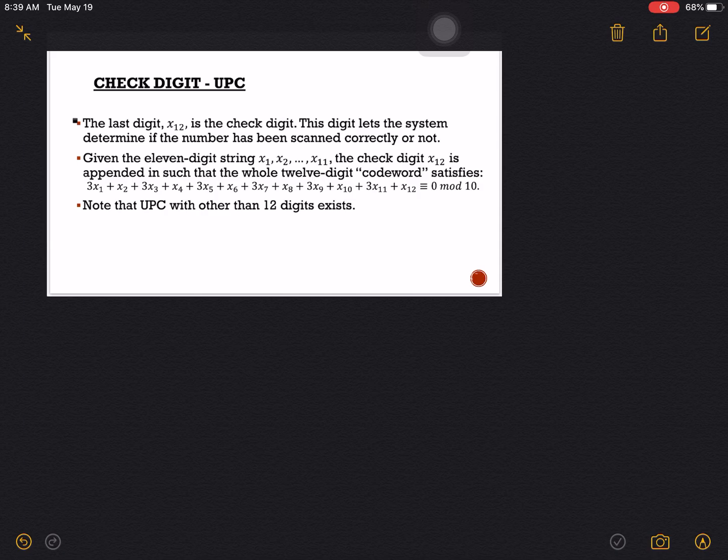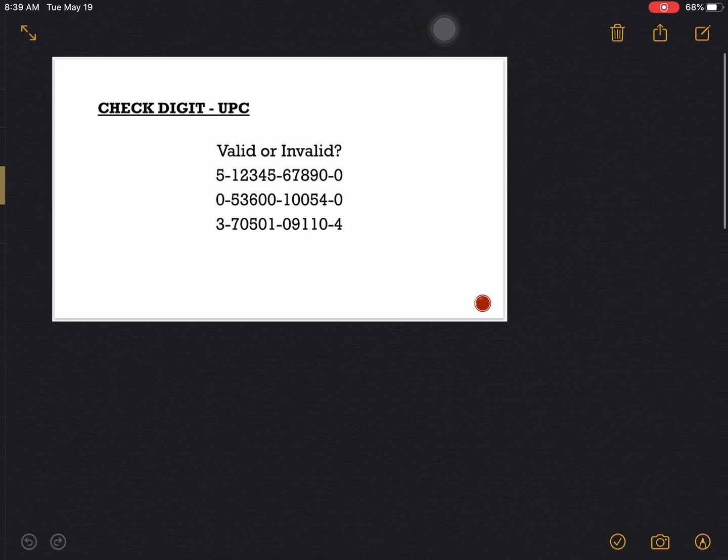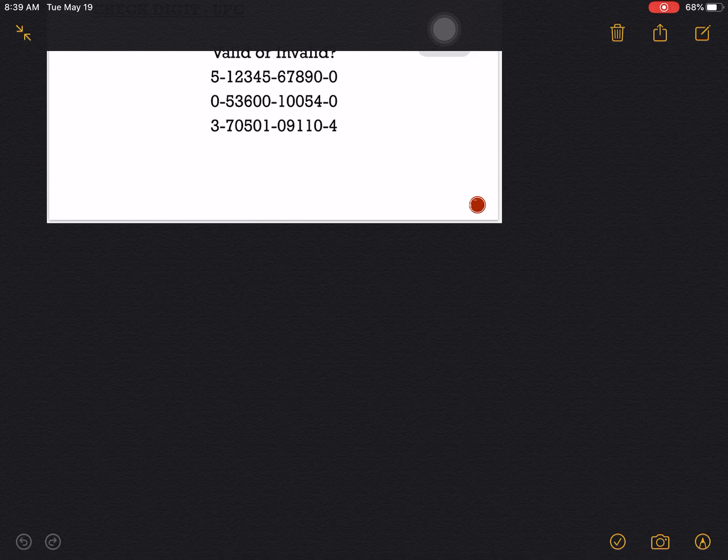So let's apply that to some examples that we have here. Let's have the first example: 5-1-2-3-4-5-6-7-8-9-0-0. It looks not legit because we are having a series of numbers with the correct increasing order of 1, 2, 3, 4, and so on, but let's see if it's valid or not.